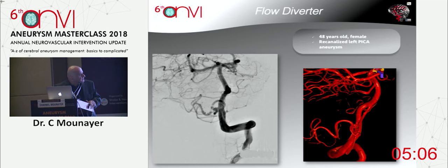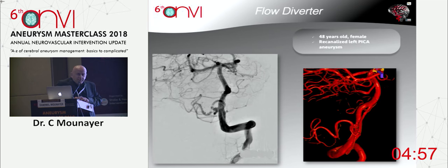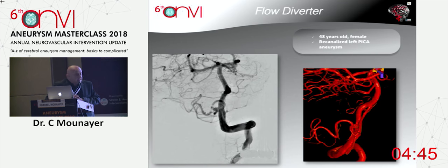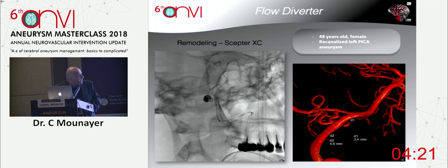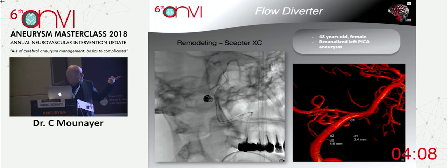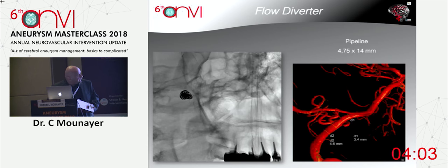This is a PICA aneurysm that was coiled during rupture and the patient came back. We could put a pipeline over the vertebral artery to reduce flow inside the sac, but it's not certain the aneurysm will be occluded — especially since the PICA will likely remain patent. So how do we keep the PICA patent and completely exclude the sac? We put coils in the aneurysm again, without occluding the neck, keeping the PICA patent. And here we oversized our flow diverter a bit to reduce the flow diversion because we had coiled the sac, and our goal is to reduce flow at the origin of the PICA.